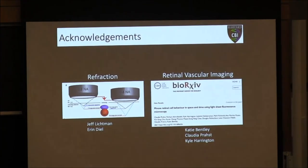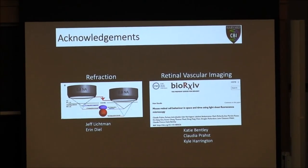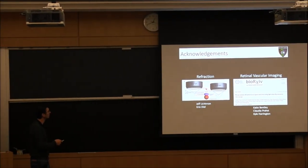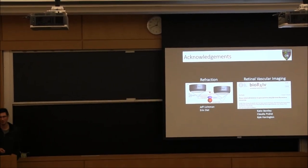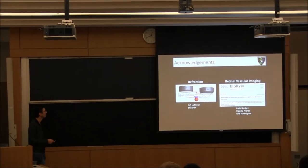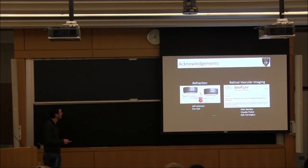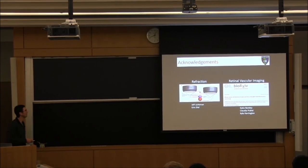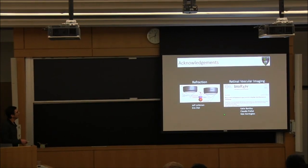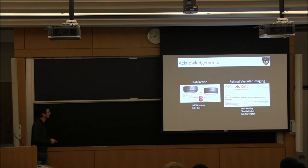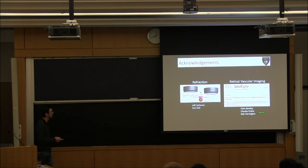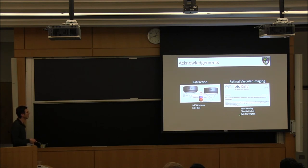Hopefully what you come away with today is that spherical aberration and refraction play a big role in image quality, especially in 3D microscopy. It's something we don't pay enough attention to. A refractive index mismatch can corrupt any volumetric quantitation you're doing, compressing images that need to be corrected. It can affect your axial sampling and you may lose information about important structures. Thanks for coming out — this whole refraction project started about three years ago, and the retinal vascular imaging work is now a bioRxiv preprint.